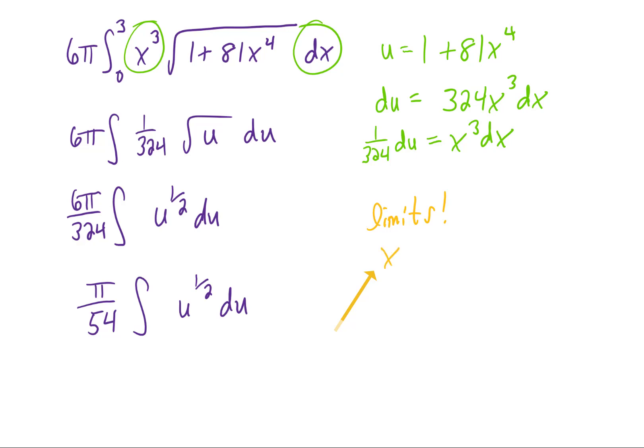However, now we're integrating with respect to u, so let's find out what the limits on u are. Taking x = 0 and plugging it into this equation gives us u = 1. Plugging x = 3 into the same equation gives us a really big number—I'm getting u = 6563. So our limits on this integral are going to be 1 to 6563.